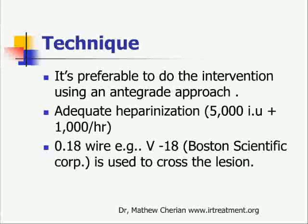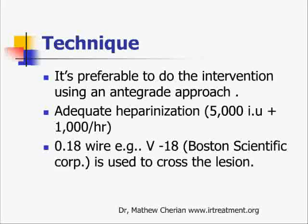We prefer to perform the procedure with an anterograde approach because we find that it gives us much better control of the wire and recanalization rates are better. We give 5000 units of heparin followed by 1000 units per hour, and we normally use a 0.018 wire like the Boston Scientific V18.